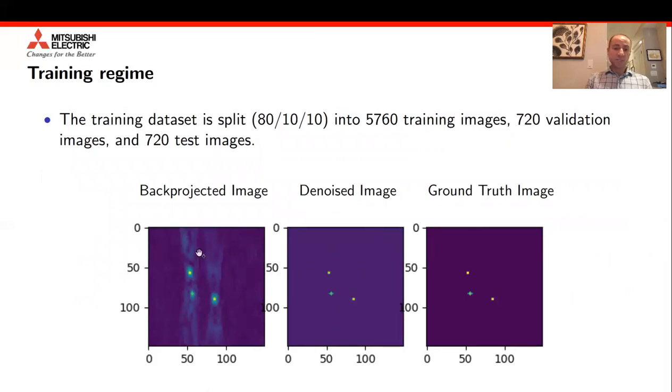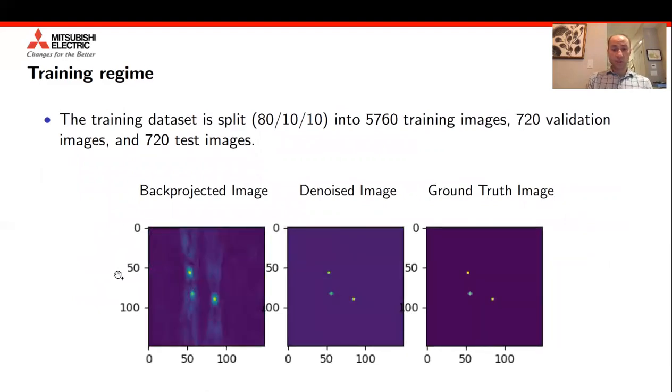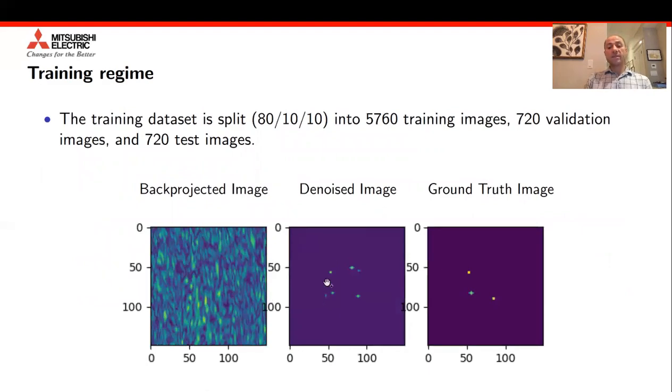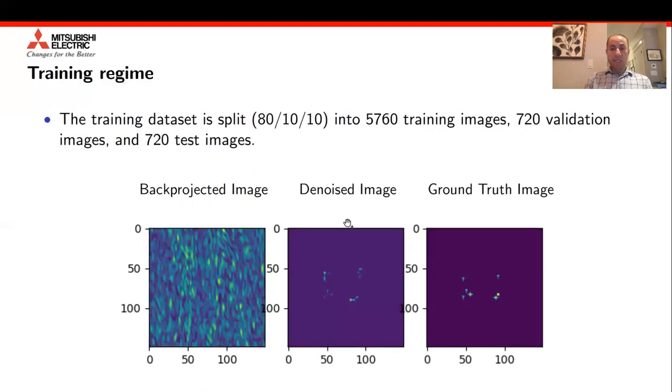To give an idea of what the training dataset looks like, this is an example of a back projected image that goes into the input to the unit. This is the denoised image that it produces, and this is the ground truth image. It shows that the reconstruction is very nice. In the case where you have the wrong operator, it still is able to identify target positions, but it adds additional targets to the problem or to the denoised image. Here we show that the network learns the identity operator. These are other more complex target configurations. You can see that the network is able to identify specific targets, but also it adds additional incorrect targets.